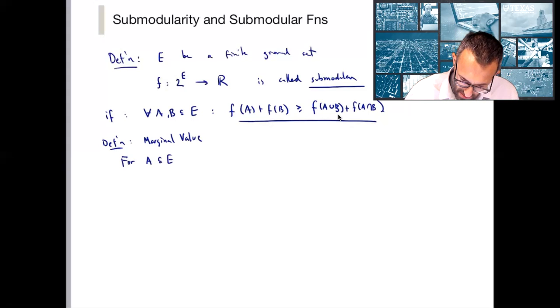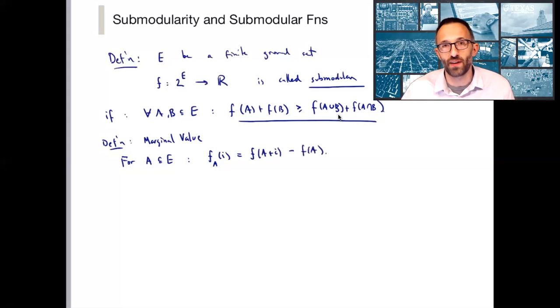For a subset A of the ground set E, we denote by f subscript A of i, for i some element of the ground set that doesn't belong to A, the value of f of A plus i minus f of A, hence the marginal value of the element i with respect to the set A.